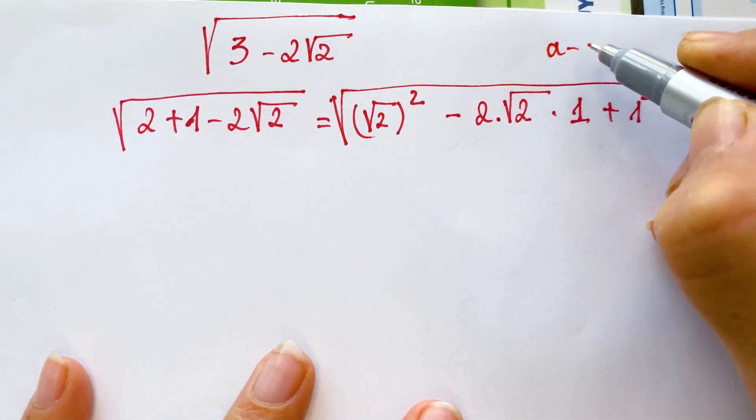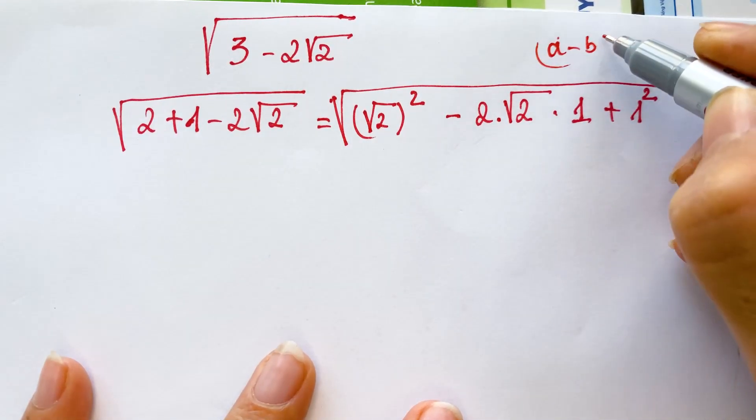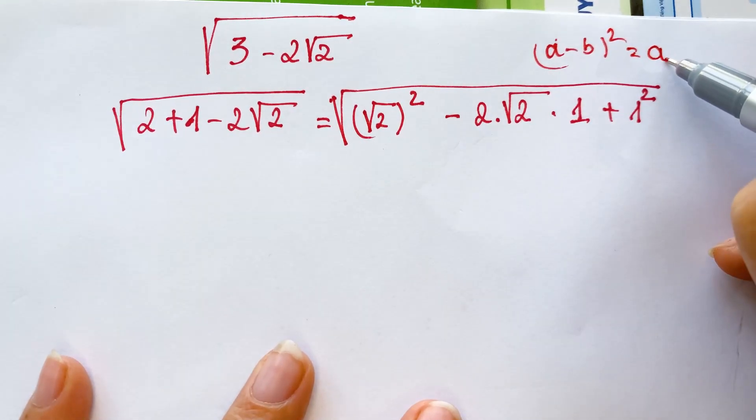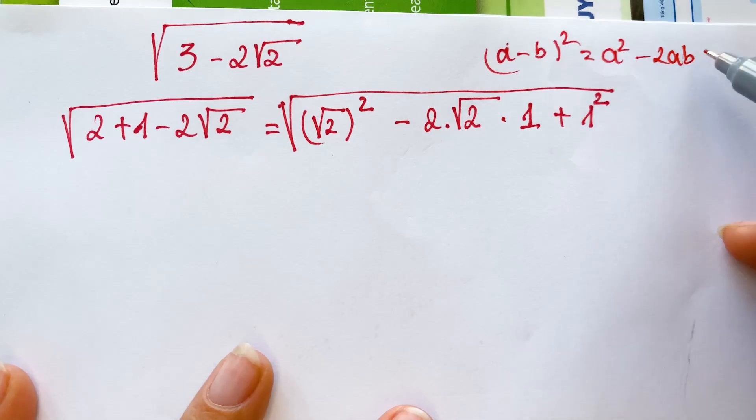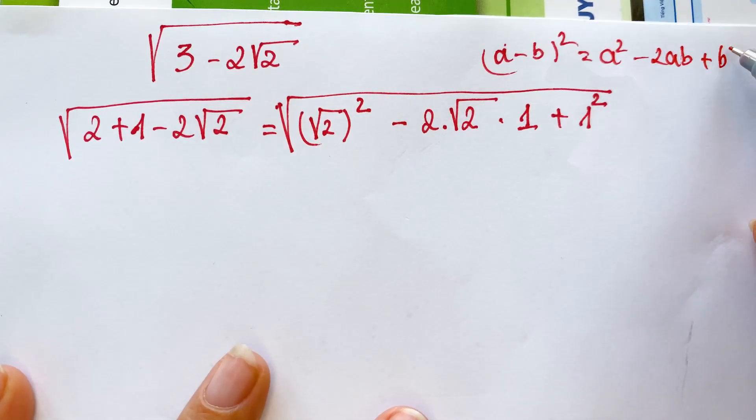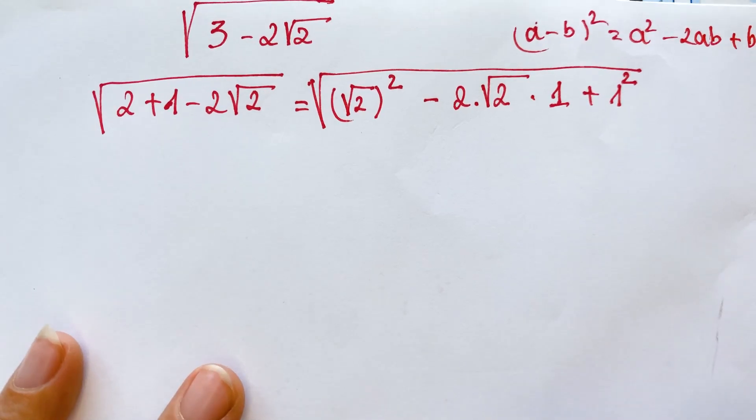a minus b square equals a square minus 2ab plus b square.